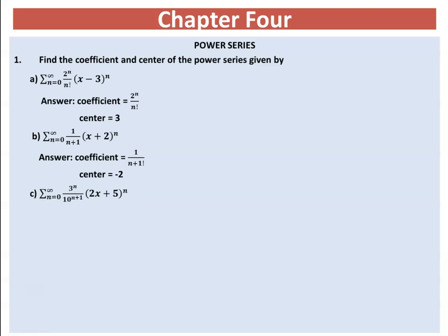For part (c), the power series is given by 3 to the power of n over 10 to the power of (n+1) times (2x+5) to the power of n. This is special because in the first two cases the coefficient of x was 1, but here the coefficient of x is 2. This is not in standard form, so we need to make the coefficient of x equal to 1. To do that, take 2 as a common factor.